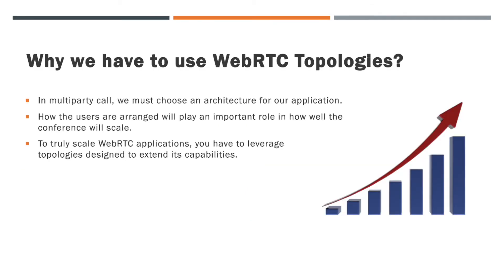In a multi-party call, we must choose an architecture for our application. This is because how the users are arranged will play an important role in the conference call. A topology refers to the layout of a computer network. Network topology refers to the manner in which the links and nodes of a network are arranged relative to each other. Here you can consider nodes as each user. Topology can be described either physically or logically — it means how we align our users in a network.